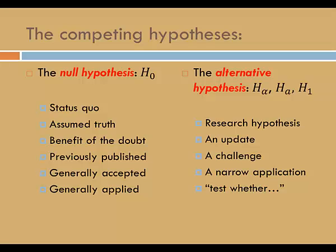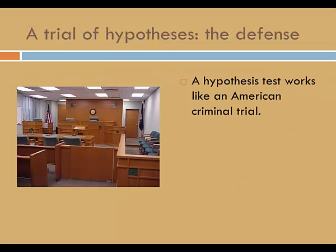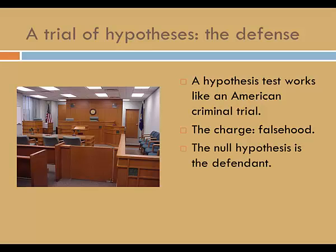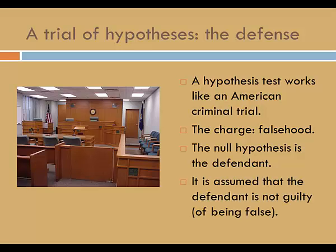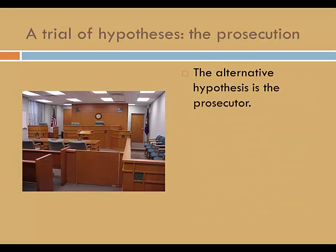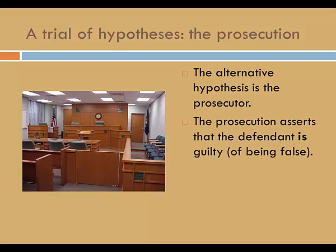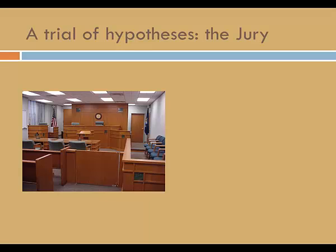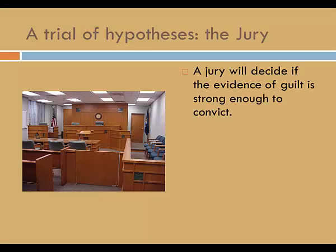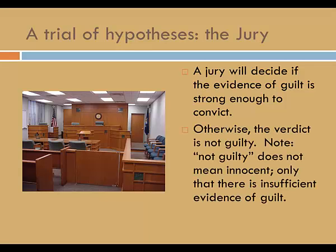So how do we decide between the two competing hypotheses? A hypothesis test works like an American criminal trial. The charge is falsehood. The null hypothesis is the defendant — it is assumed that the defendant is not guilty, not guilty of being false. The alternative hypothesis is the prosecutor. The prosecution asserts that the defendant is guilty of being false. It is up to the prosecution to prove guilt. A jury will decide if the evidence of guilt is strong enough to convict. Otherwise, the verdict is not guilty.